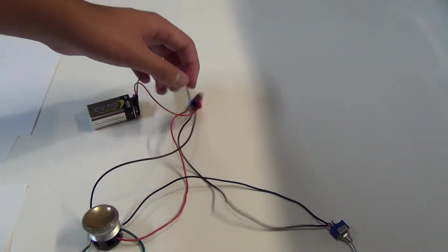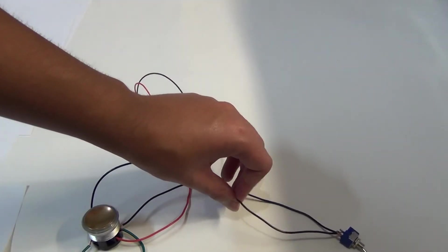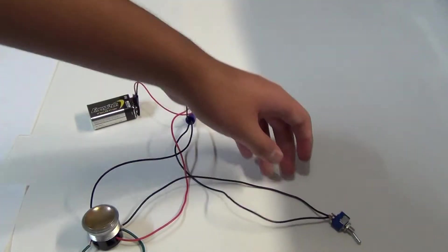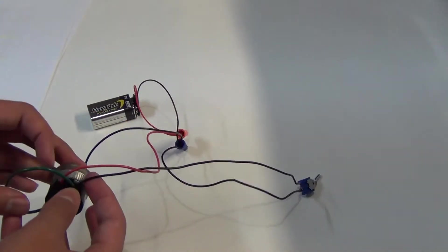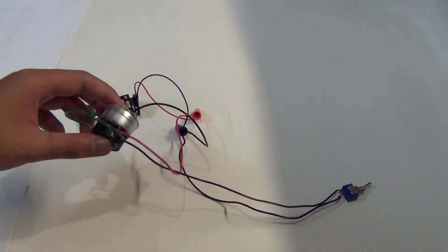And the negative from the battery, if you want a toggle switch, goes to the toggle switch. And then another negative from the toggle switch into the negative terminal. So that will toggle the light on or off.